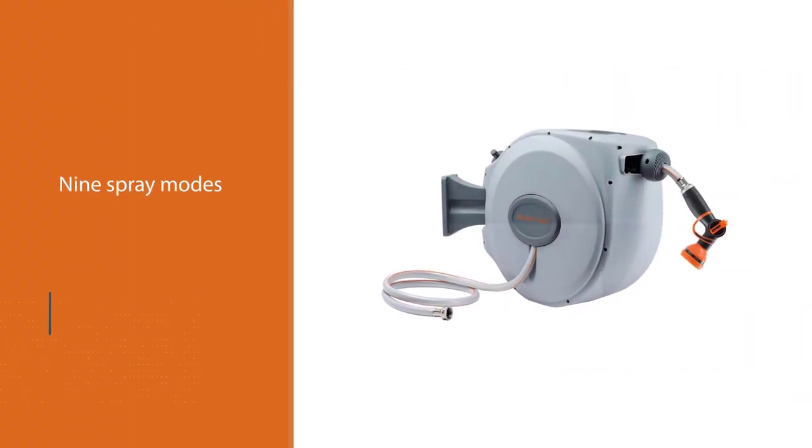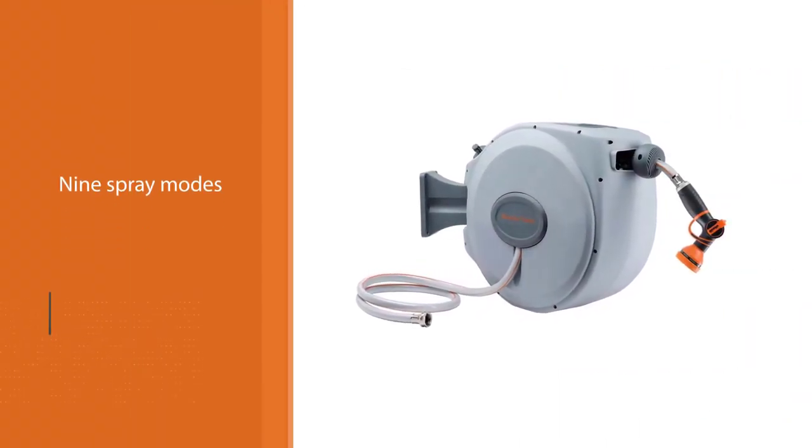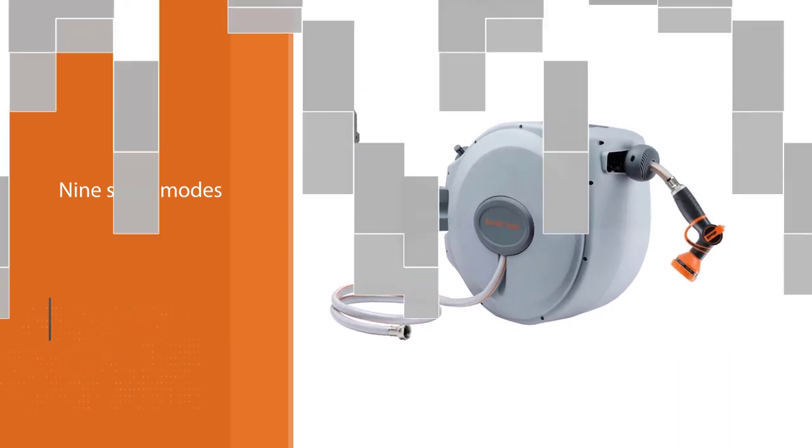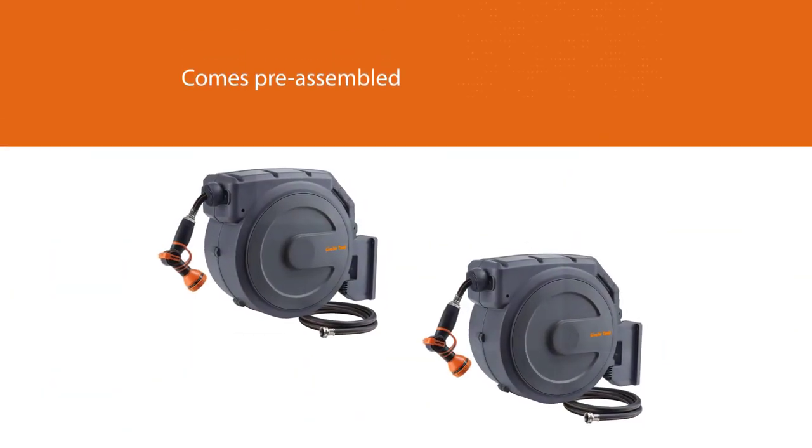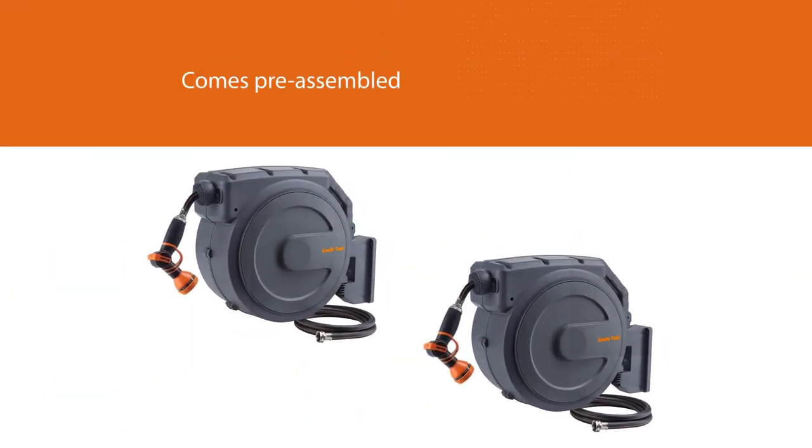We also like that you can lock your hose at any length to avoid dragging around unneeded slack. What's more, it comes pre-assembled and is easy to mount to the side of your house or shed.